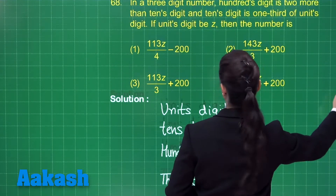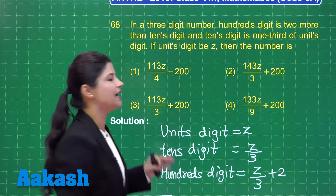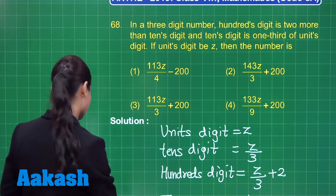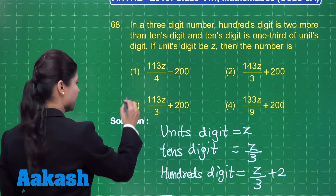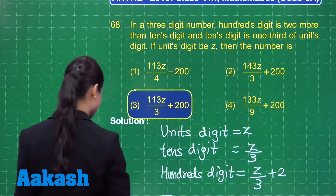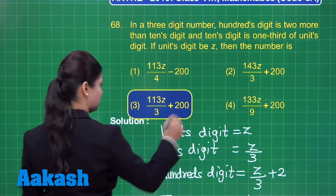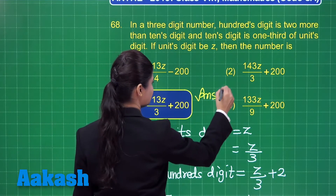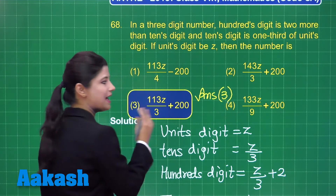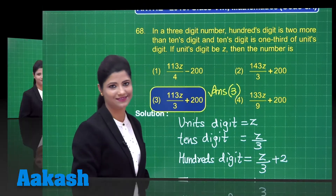Out of the 4 options given, the answer is option number 3: 200 plus 113z upon 3. I hope it is clear. Let us take up our next question.